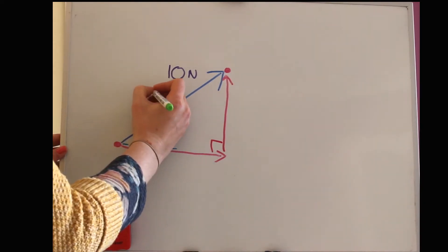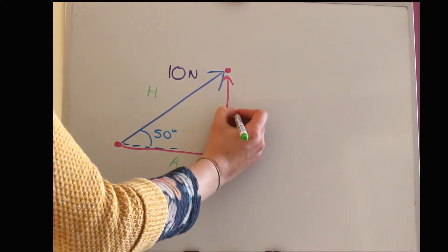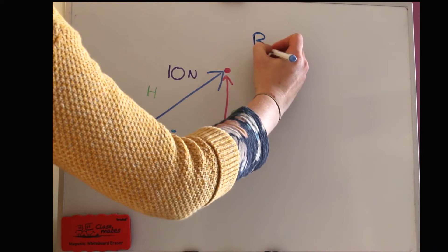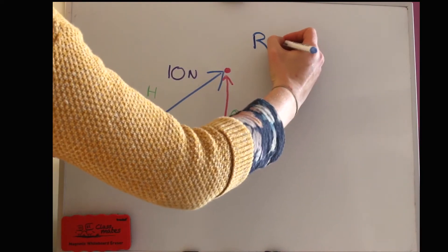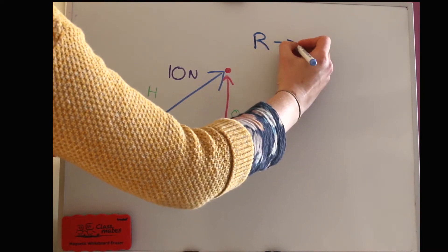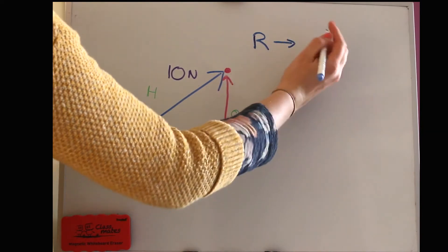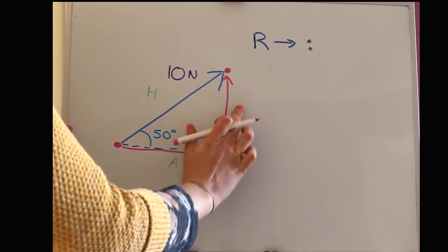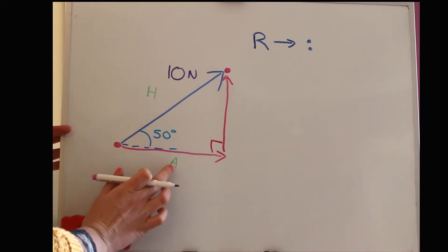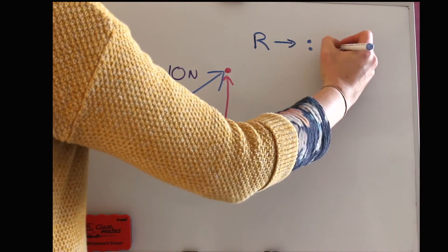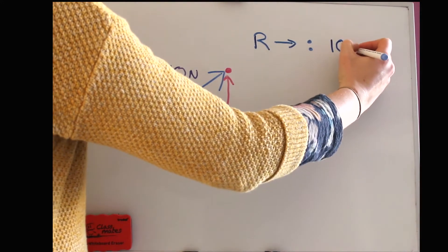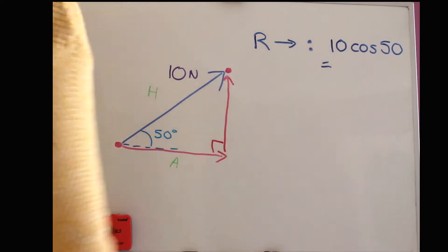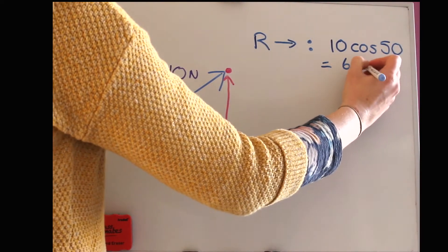To resolve this vector, I label the triangle H, O and A, and we find its horizontal and vertical components. I write a little R for resolve with an arrow for the direction. Resolving horizontally: if we want the adjacent side, we're not interested in the opposite, so that's using cos. Cos is adjacent over hypotenuse, so we get 10 times cos 50, and on the calculator I get 6.43 newtons.